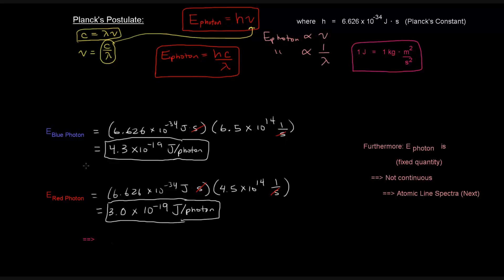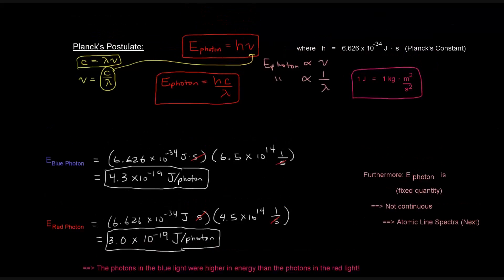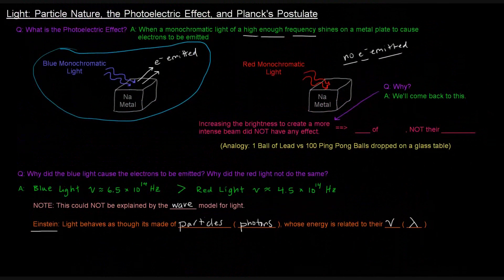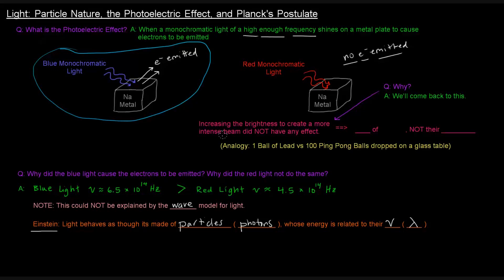So what's the idea here? The point is that the energy of the blue photon, of each blue photon, is higher than the energy of each red photon. So the photons in the blue light were higher in energy than the photons in the red light. So let's scroll back up here to what we said we'd come back to. We mentioned that increasing the brightness of the red light to create a more intense beam did not have any effect. Why is that?